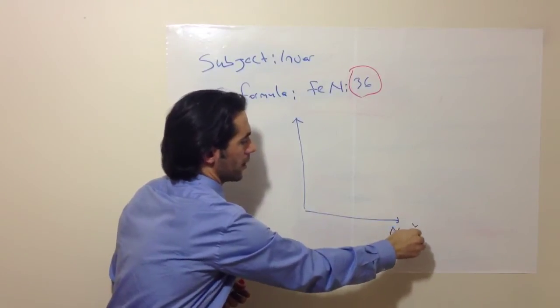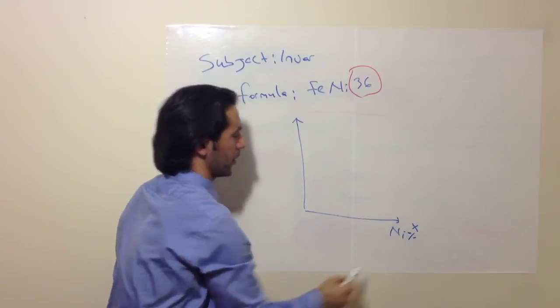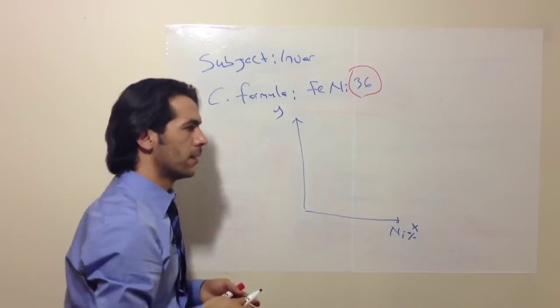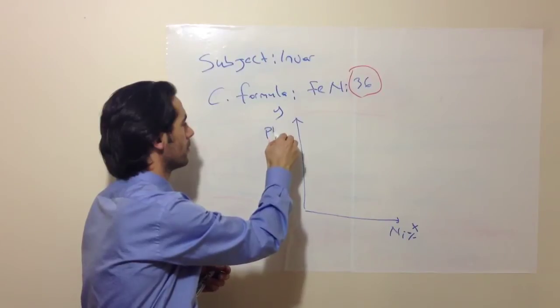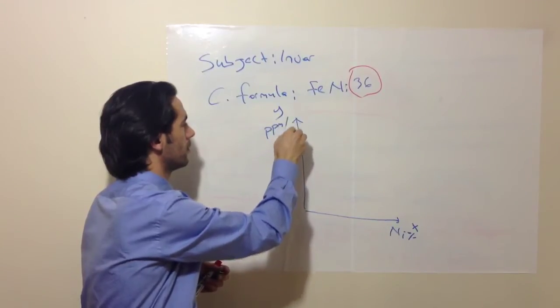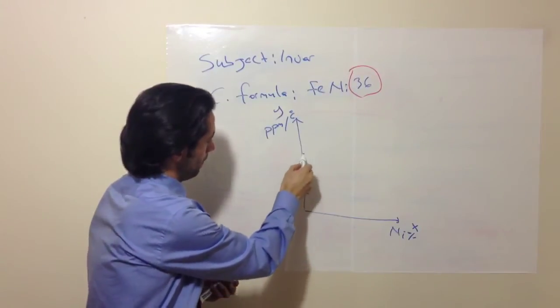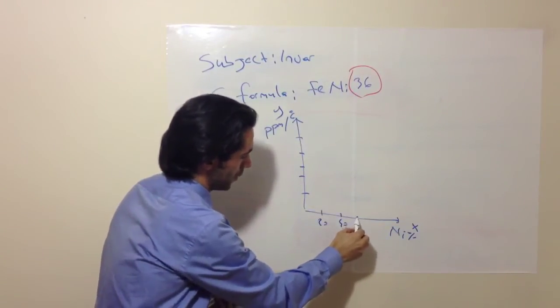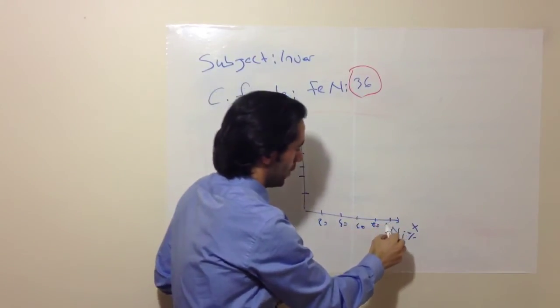This is our X axis represents the percentage of nickel. This is our Y axis represents the rate of thermal expansion. 20, 40, 60, 80 and 100.